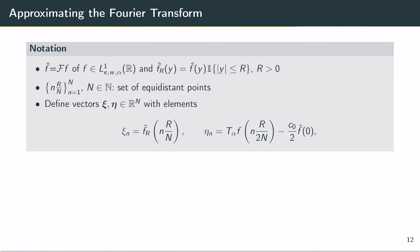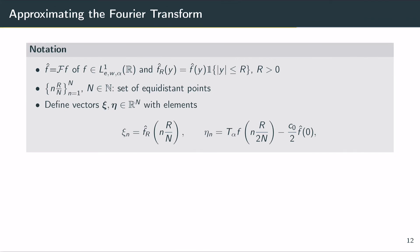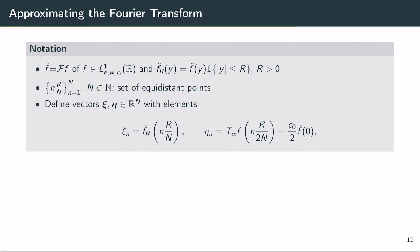We'll use the following notation. We denote by f-hat the Fourier transform of our even function f, which is in our integrable space L1, and we denote by f-hat sub r the restriction of the Fourier transform of f onto the interval minus r to r. We also consider the set of equidistant points given here N, and define the vectors x, psi, and eta by these formulas. Let's consider eta n for any n between 1 and capital N.